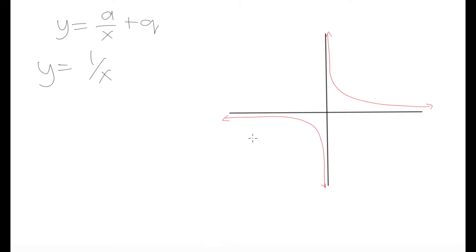The curves go on in these directions, getting closer and closer to these lines, but they are never going to touch or cross them. It turns out that we have a very special name for exactly that — it is called an asymptote. In this function, we have two asymptotes: the x-axis, which is acting as one asymptote, and the y-axis, which is acting as the second asymptote.